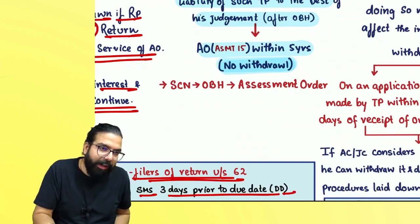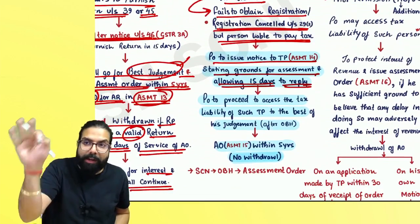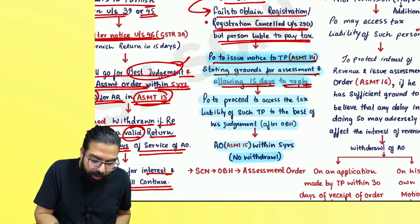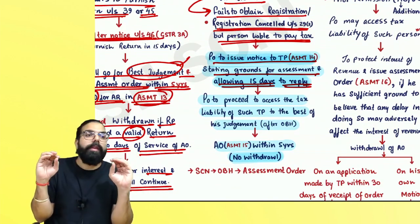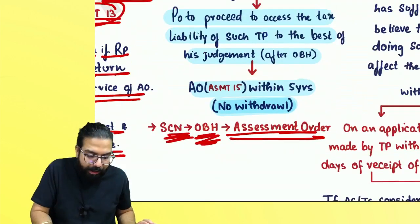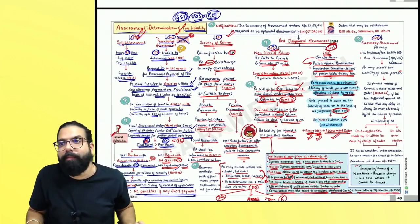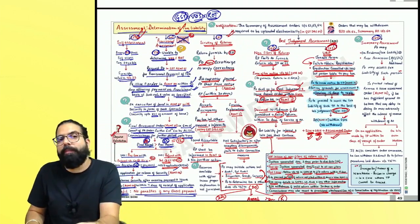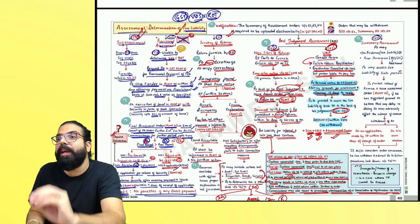There is no withdrawal in this scenario for section 63. Remember — in best judgment assessment of an unregistered person, a notice is given first, you are given an opportunity of being heard, and only then the assessment order is passed. So because the assessment order is passed after notice and opportunity of being heard, there is no further withdrawal provided.